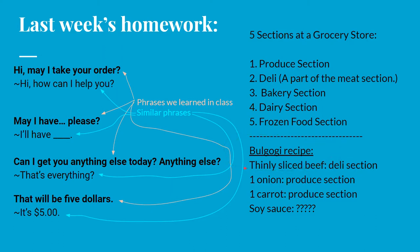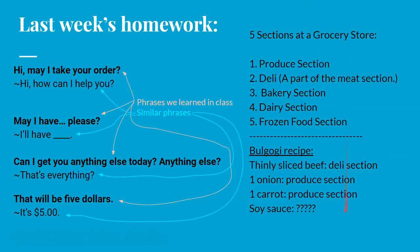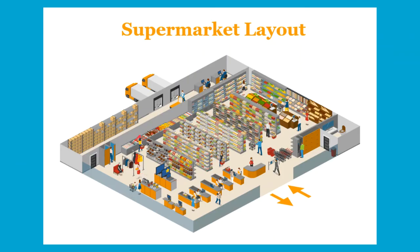Where would you find the beef for the bulgogi? Did you write down the deli section? One onion and one carrot can be found in the produce section. Good job writing down these ingredients and where you can find them. But some ingredients for bulgogi — like soy sauce — Bob the Canadian did not mention. In his video, Bob mostly talked about the outside, or the perimeter section, of the supermarket.